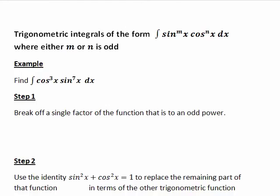The first step is to break off a single factor of the trig function that is to an odd power. But wait a minute, in this case both of them are to an odd power. So which one do we choose? Well, in this case we could actually choose either, but in practice it's simplest to pick the one that's to the lowest power, which in this case is cos x since that is just to the power of 3.